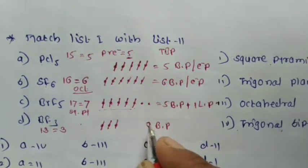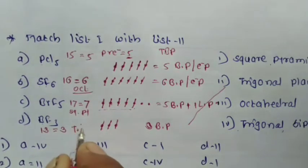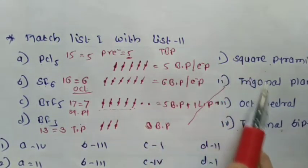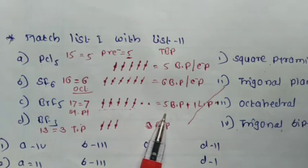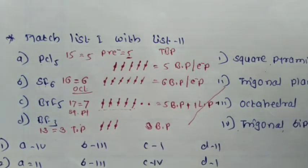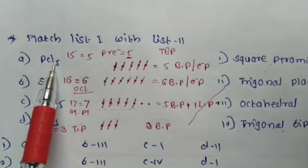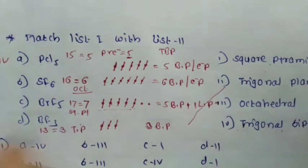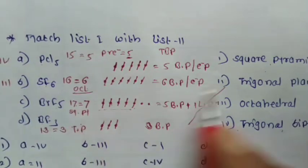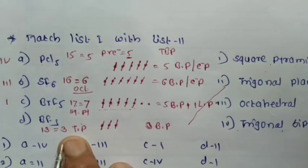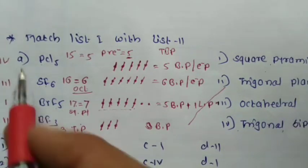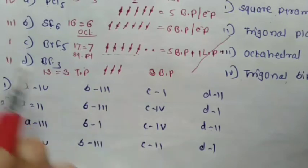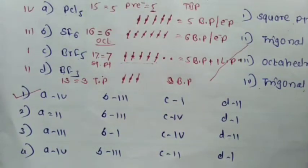BF₃: Boron is a group 13 element with 3 valence electrons. With 3 fluorine atoms attached, BF₃ forms 3 bond pairs and 0 lone pairs. With 3 bond pairs the geometry is trigonal planar. Matching results: PCl₅ is trigonal bipyramidal (4th option), SF₆ is octahedral (3rd), BrF₅ is square pyramidal (1st), BF₃ is trigonal planar (2nd). Answer: 4, 3, 1, 2 — option 1.